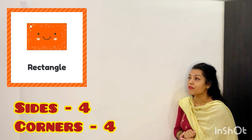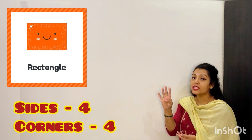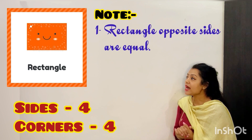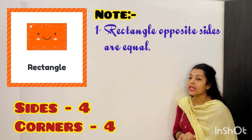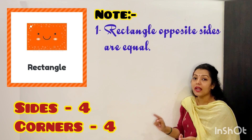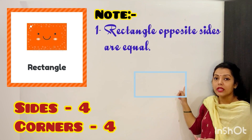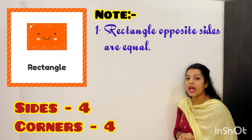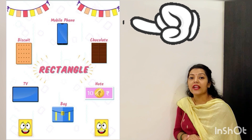Next we have rectangle shape. You must have seen this shape in your day to day life. As you can see, rectangle also has 4 sides and 4 corners. But like square, all its sides are not equal — only opposite sides are equal. This side is equal to this side, and this side is equal to this side. Come let's see some examples of rectangle shape.